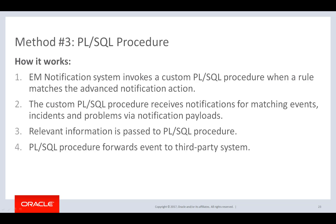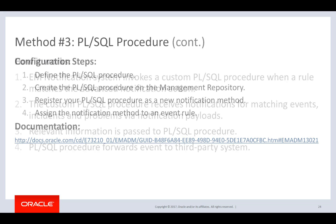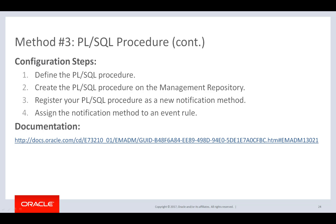The third method is a PL/SQL procedure — a script that runs on the Oracle Management Repository, or OMR. Similar to the previous two methods, when an event matches the event rule, it triggers the PL/SQL procedure, which then forwards the event to the third-party system. There are four steps to configure a PL/SQL procedure. First, the PL/SQL procedure should be defined to determine whether it is for events, incidents, or problems. Second, the PL/SQL procedure needs to be created on the EM repository using the database account of the repository owner, such as Sysman, because this is where it will run. Third, the PL/SQL notification method needs to be created from EMUI in reference to the fully qualified procedure name, which effectively registers it. Finally, the PL/SQL procedure should be assigned to an event rule so it can be triggered when an event matches the rule conditions. For more information, please visit our online documentation.